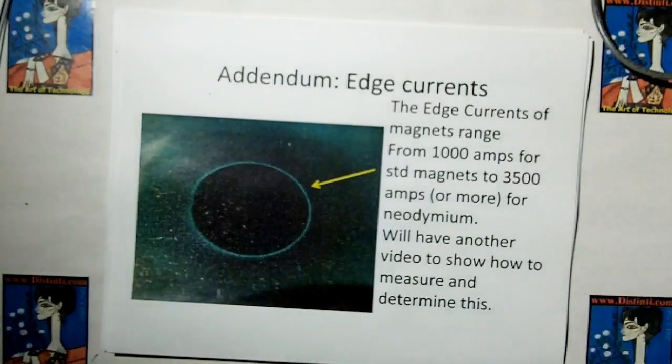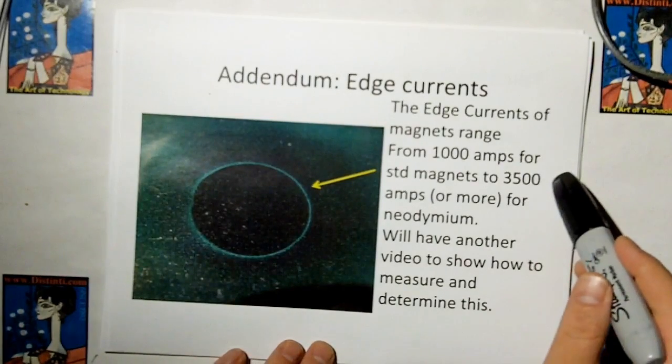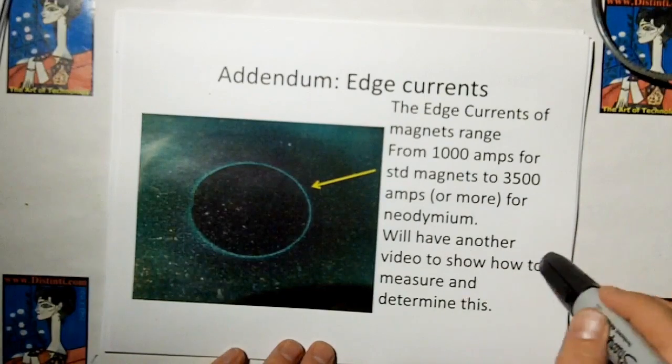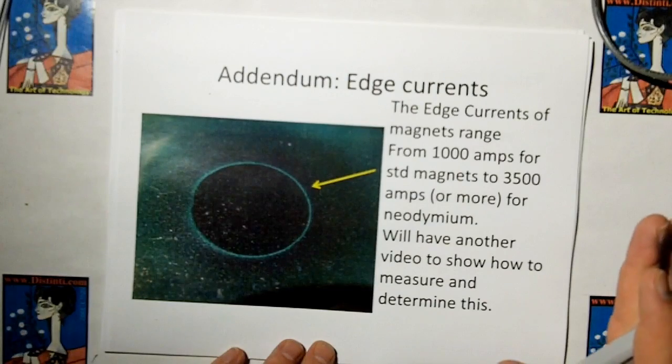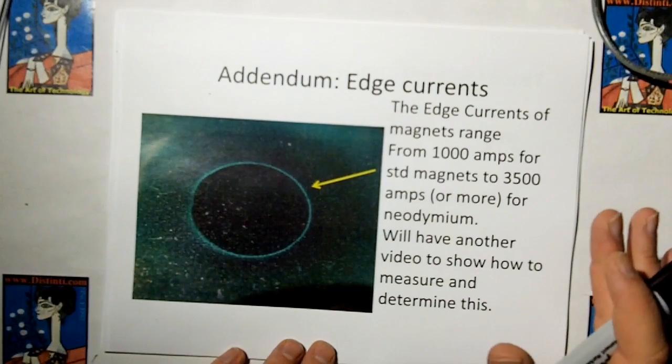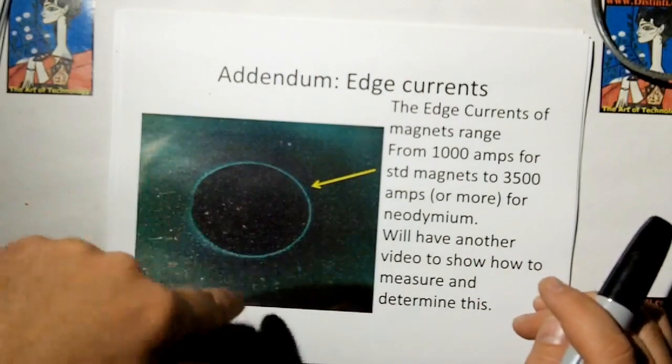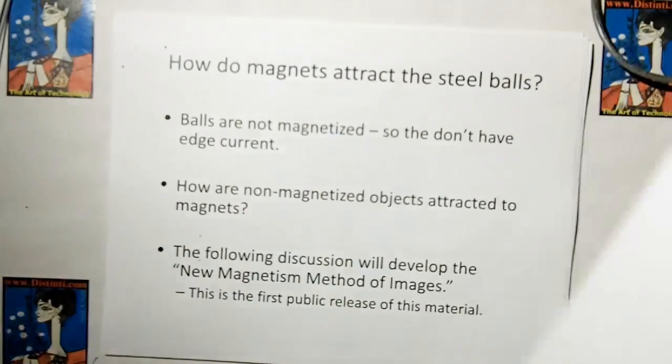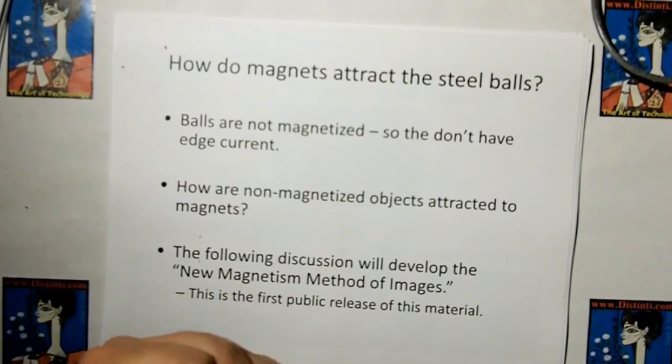I forgot to tell you in the previous video, the edge currents of the magnets range from a thousand amps for standard magnets to about 3500 amps or more for neodymium magnets. We'll have another video later to show how to measure and determine these. There's a simple sensor you can get for a couple bucks that's pretty accurate. You hook it up to an Arduino and I'll give you a spreadsheet that you can calculate the current in the ring later. I'll give that away for free so you guys can play, because playing is half the fun of this stuff.